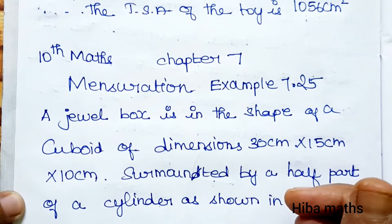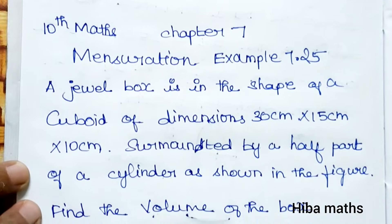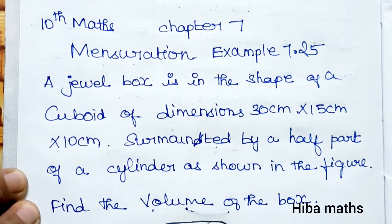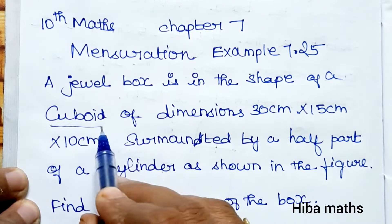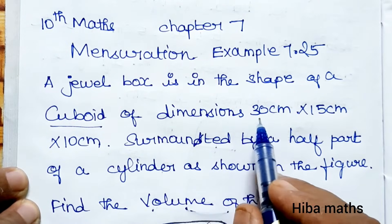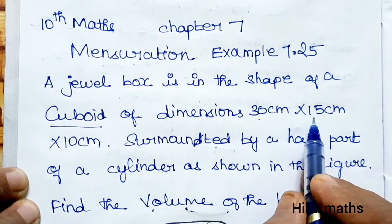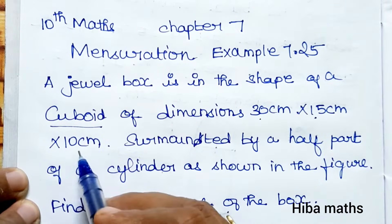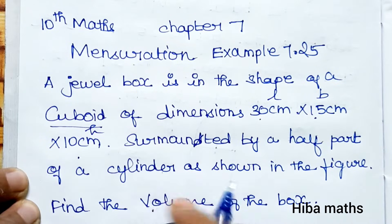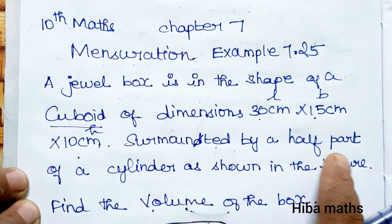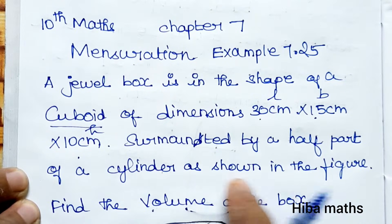Hello students, welcome to Hiba Max 10 Standard, Chapter 7 Mensuration, Example 7.25. A jewel box is in the shape of a cuboid of dimensions 30 cm × 15 cm × 10 cm (length × breadth × height), surmounted by a half part of a cylinder as shown in the figure.